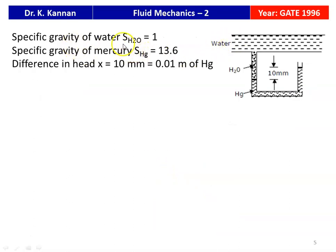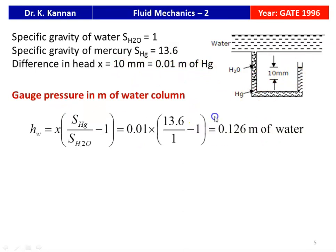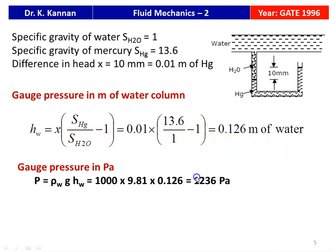The specific gravity of water is 1, the specific gravity of mercury is 13.6, and the head difference x = 10 mm = 0.01 m of mercury. The gauge pressure in meters of water: hw = x × (SG_mercury / SG_water − 1) = 0.01 × (13.6 / 1 − 1) = 0.126 m of water. Converting to Pascal: P = ρ_w × g × hw = 1000 × 9.81 × 0.126 = 1236 Pascal. This is the answer.